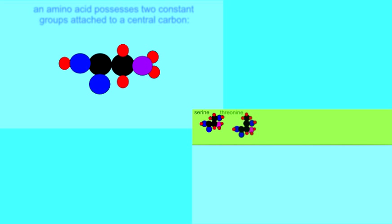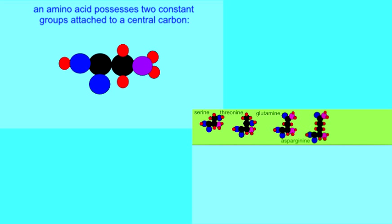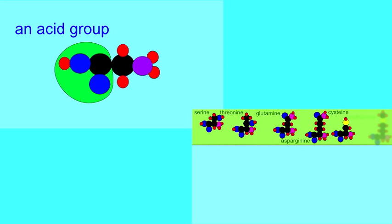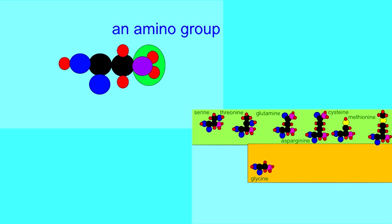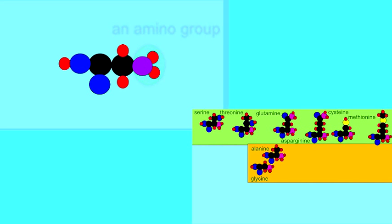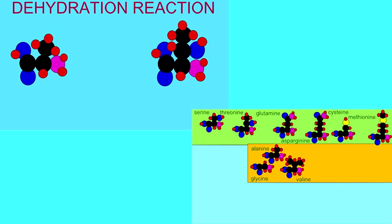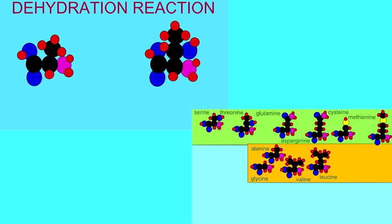All amino acids possess an amino group and a carboxylic acid group around a central carbon. The central carbon also attaches to an R group, which can vary, and this variable group determines whether the amino acids are polar or non-polar, or acidic or basic, etc.